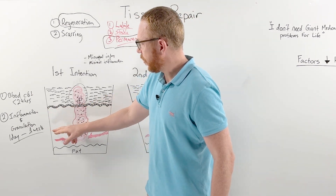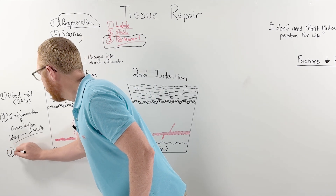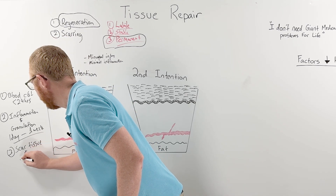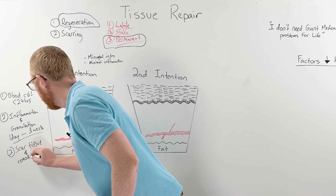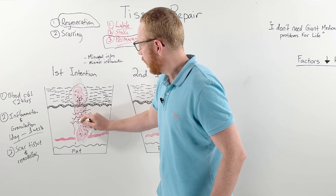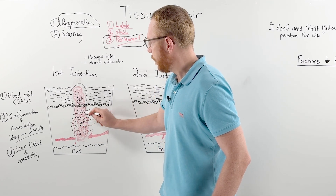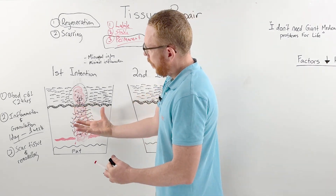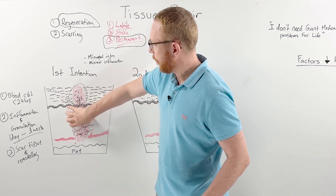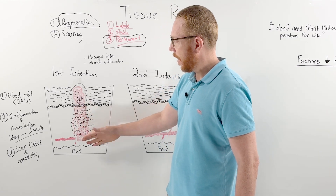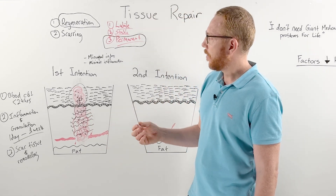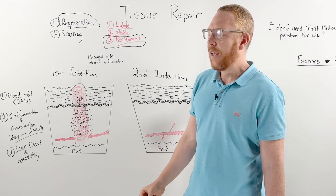Step three is scar tissue formation and remodeling. Fibroblasts lay down collagen — specifically type 1 collagen — which is all about strength and holding the wound together. The scarring gives the wound strength. At this stage the epithelium is probably completely healed, but the dermis needs that additional support. As collagen is laid down over weeks, it is slowly remodelled away, and after a couple of months the healing process has returned to its original state with a very good outcome.